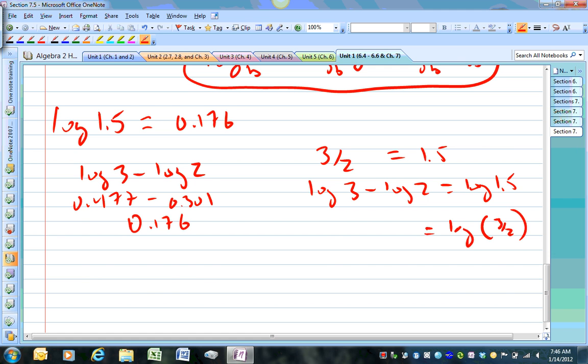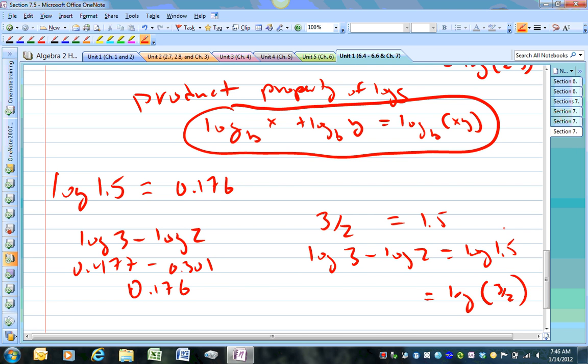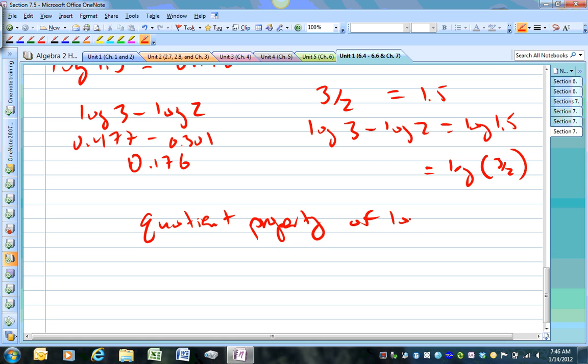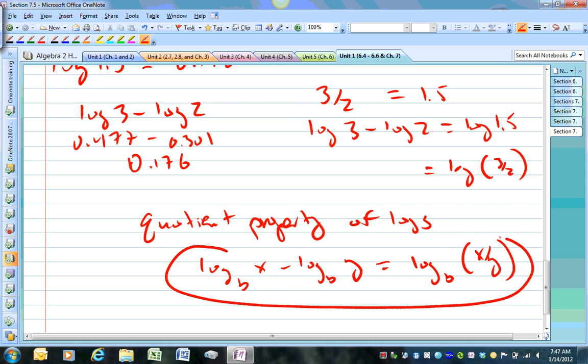If you subtract two logs, it's the same thing as dividing the two numbers I'm taking the log of. So this brings me to the next property called the quotient property of logs. Log of some base x minus log of some base y equals log of some base of x over y. So that's also another property we have to use. If you calculate log 3 and log 2, and also calculate log of 1.5, you would see that log 3 minus log 2 equals log of 1.5. And the reason why that's true is because of the quotient property of logs. So it's kind of a cool little thing there.